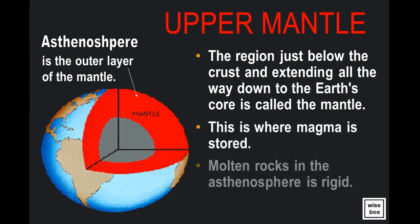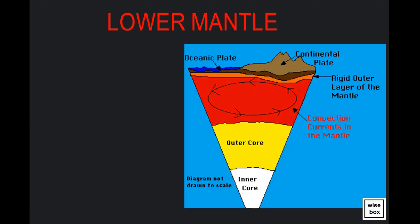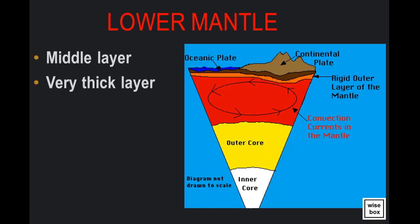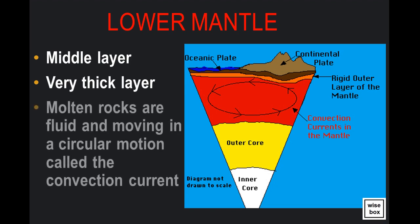Molten rocks in the asthenosphere is rigid. The lower mantle is the middle layer and is very thick. Molten rocks are fluid and moving in a circular motion called the convection current.